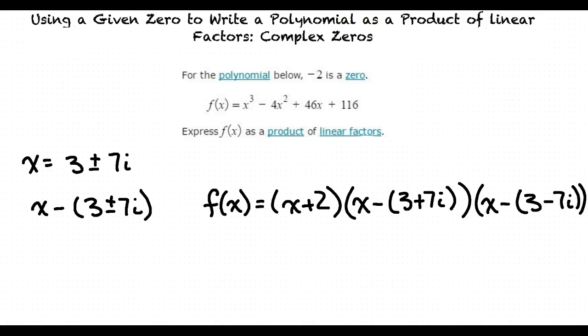Let me make sure I understand the whole process. First, we use the zero given to us to find a linear factor of the quadratic. Then, using polynomial long division, we find the quadratic factor and then use the quadratic formula to factor this even further. Is that right? That's exactly right. Good job.